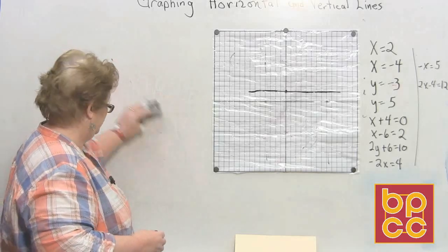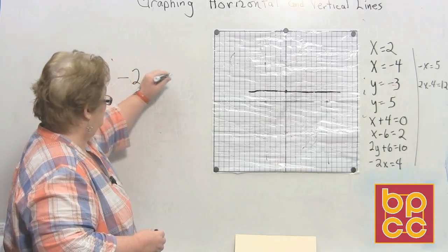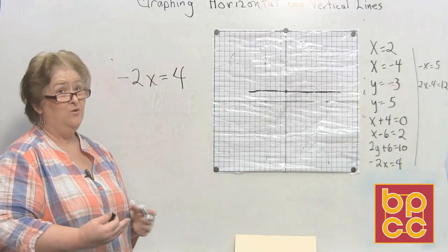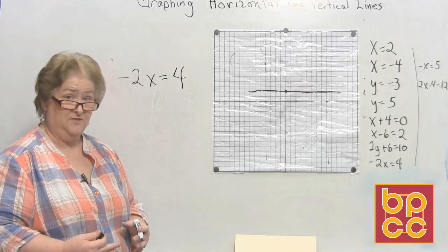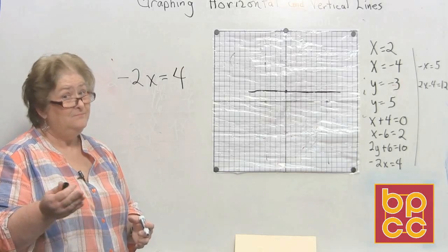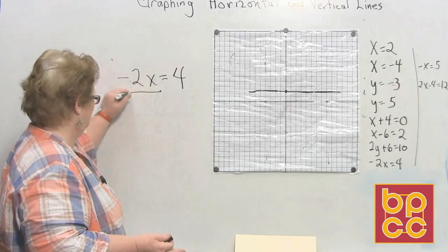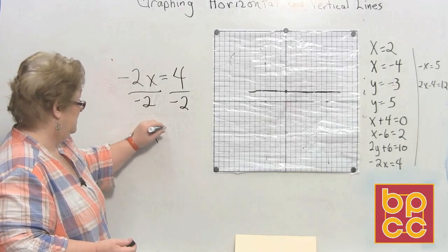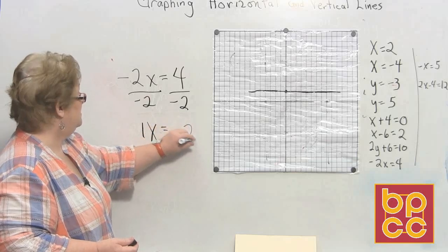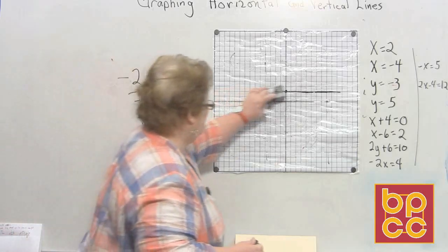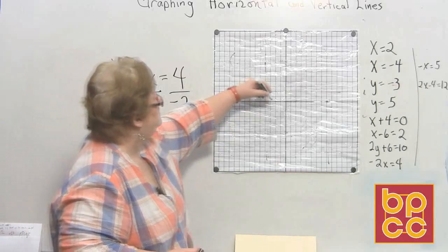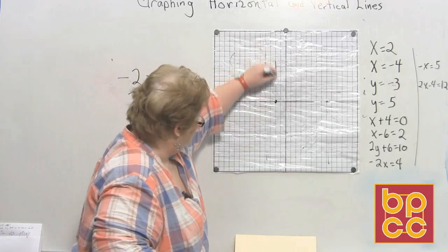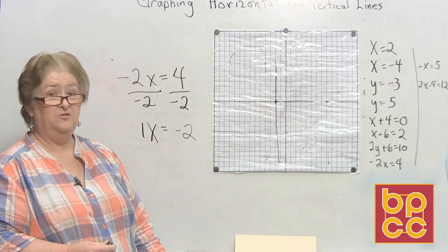Negative 2X equals 4. The X is on the side by itself, but the problem is we don't graph for a negative 2X — we graph for a single positive X. So we're going to divide both sides by negative 2. A negative divided by a negative gives positive X, and 4 divided by negative 2 is negative 2. So I'm going to go to negative 2 on the X, and it has to physically cross over itself. There is my vertical line at negative 2 on the X axis.